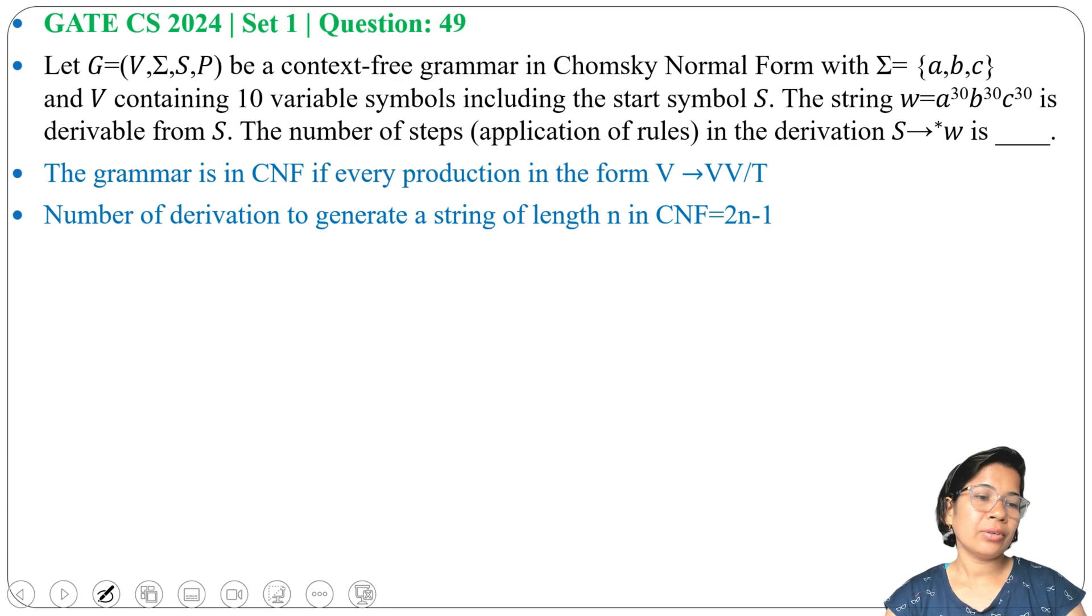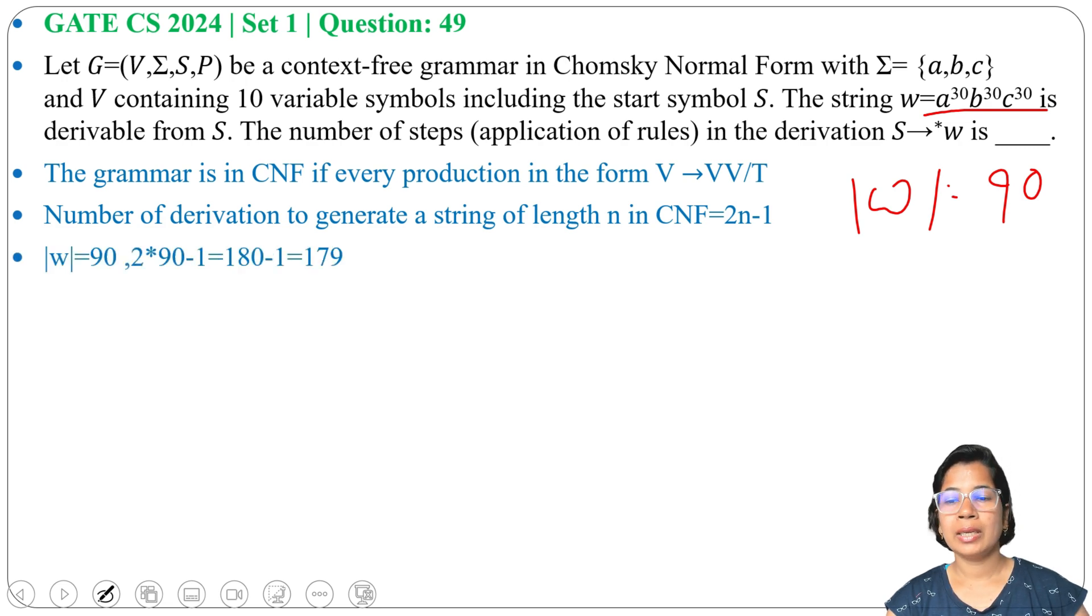Here, what is the string length? 30 + 30 + 30 = 90. So when string length equals 90, the number of steps required is 2 × 90 - 1 = 180 - 1 = 179.